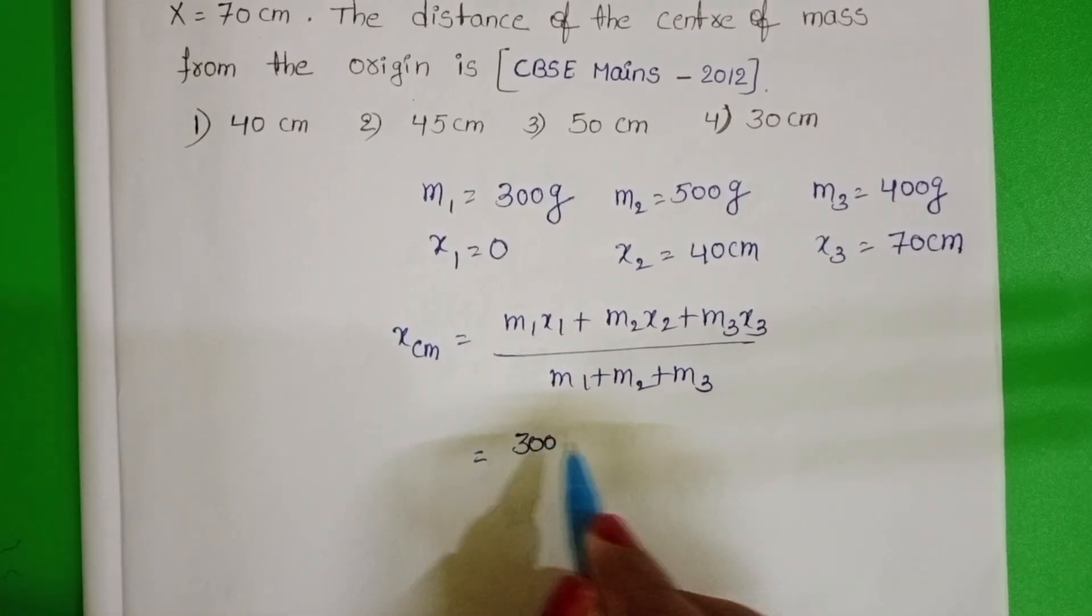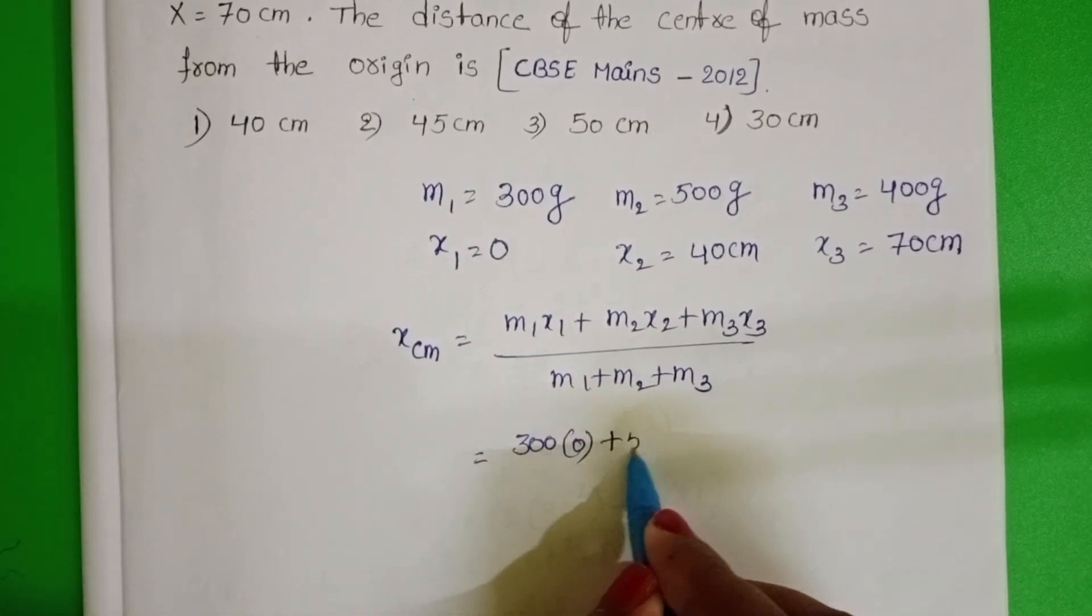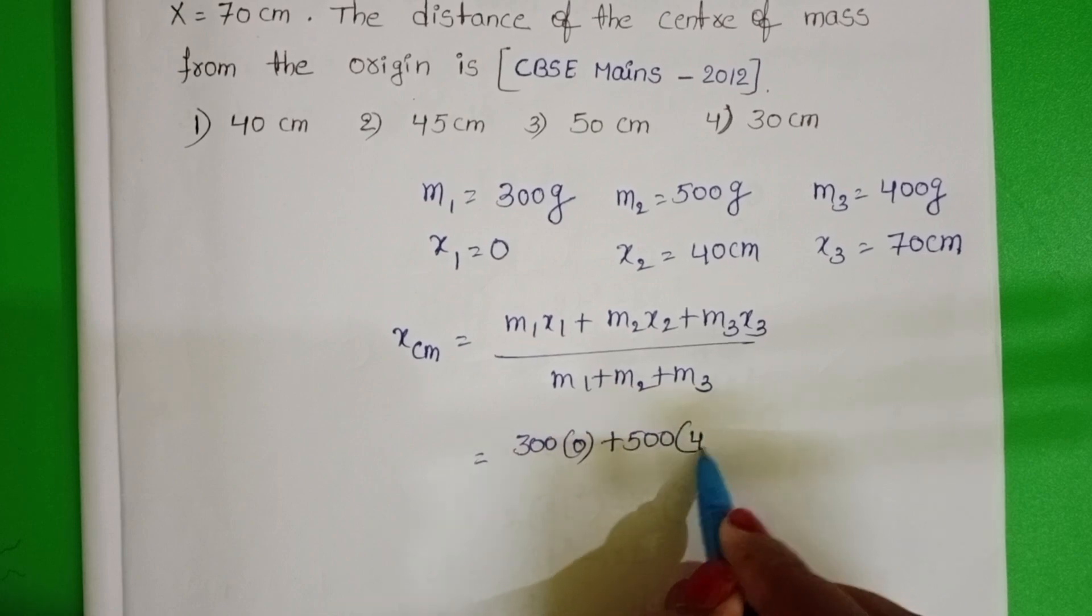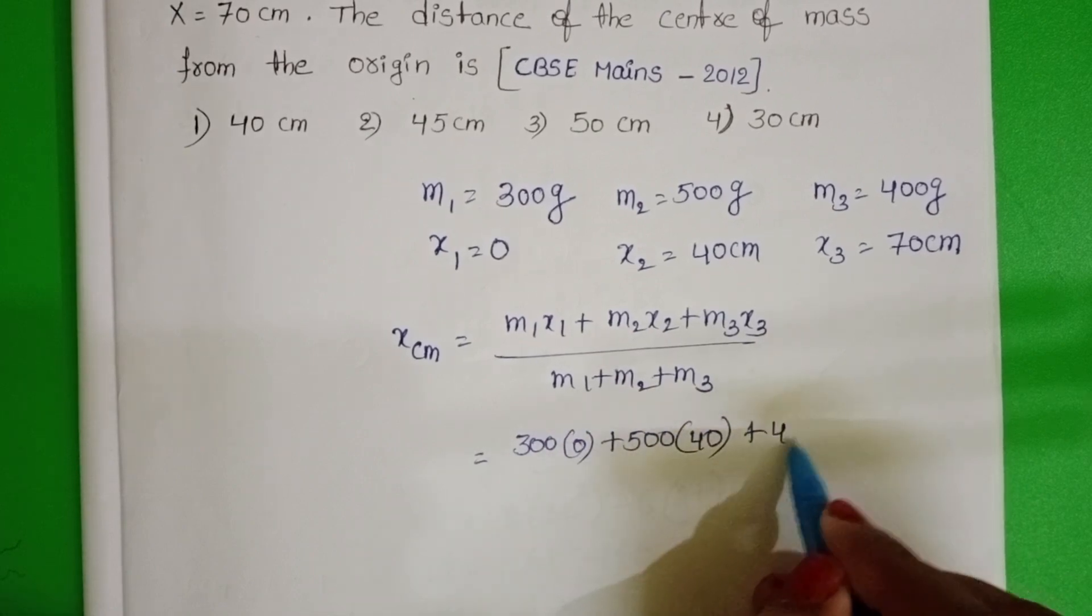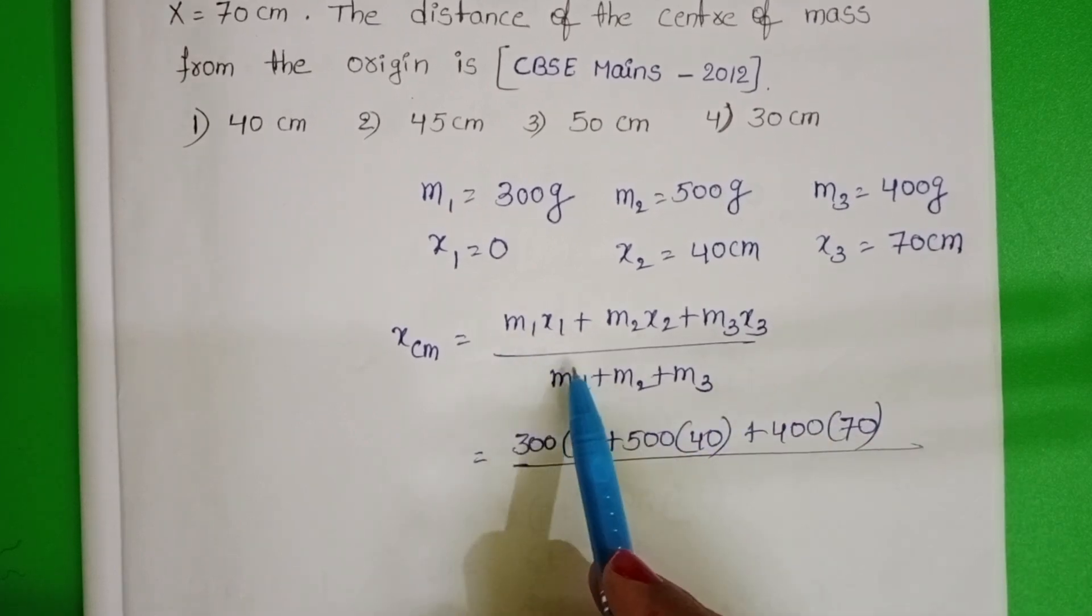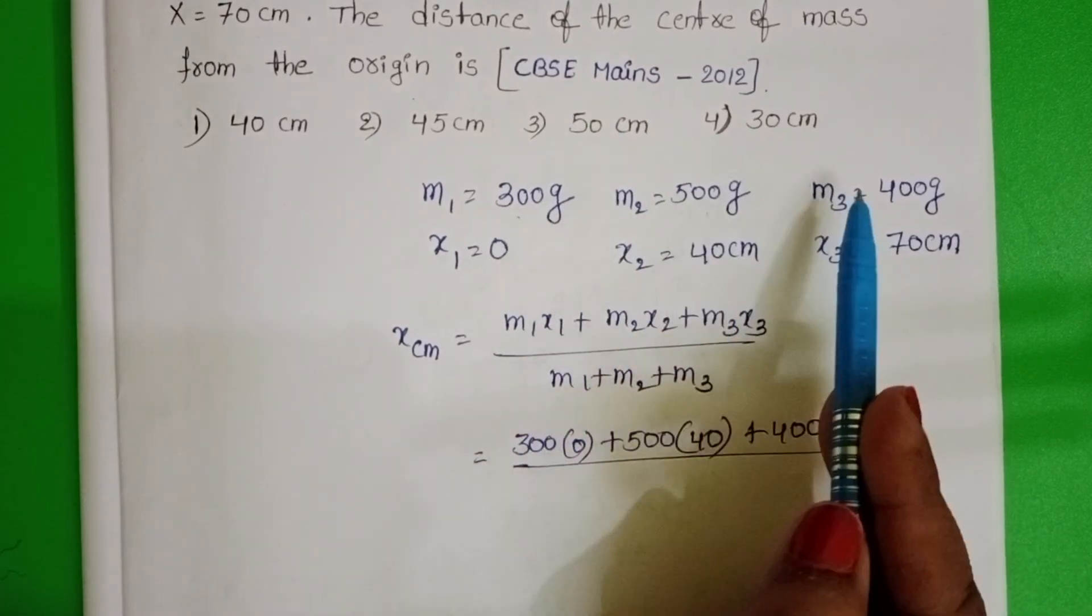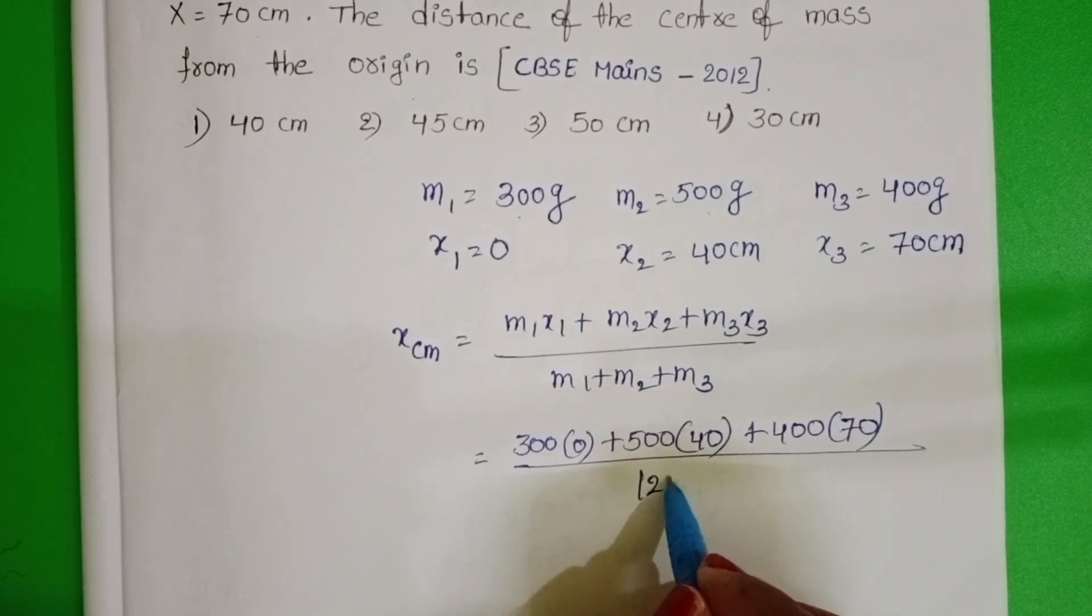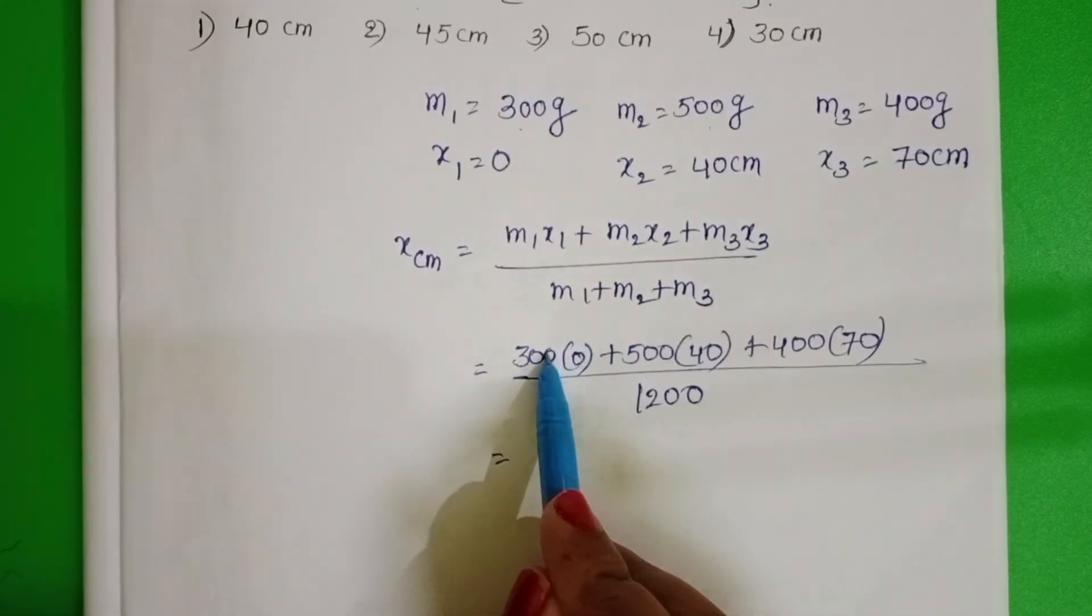300 times 0 plus 500 times 40 plus 400 times 70, divided by total mass 300 plus 500, that's 800, plus 400 equals 1200. This term is 0.